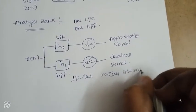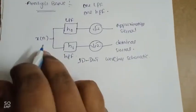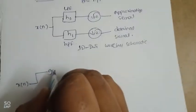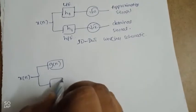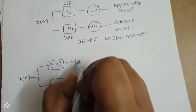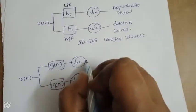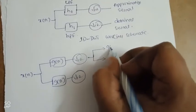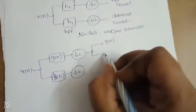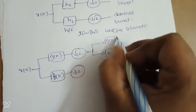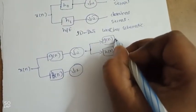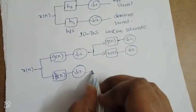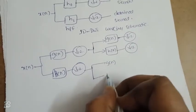In two dimensions, the same process applies. The signal x(n) passes through h(n) and g(n) filters, followed by down-sampling. h(n) is the low pass filter and g(n) is the high pass filter, and the same process is applied repeatedly.